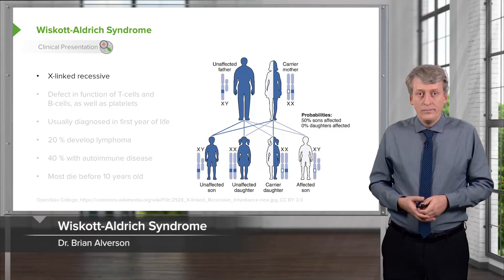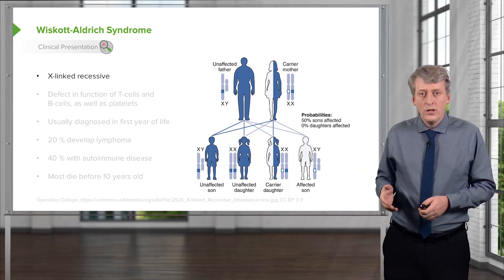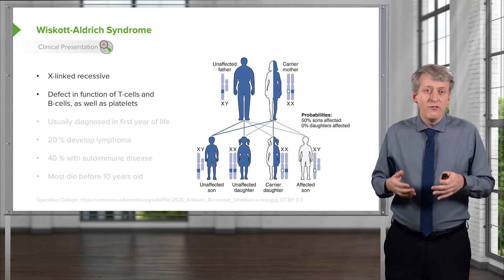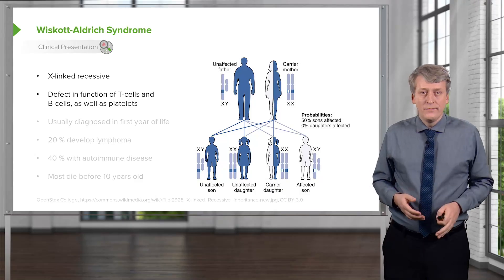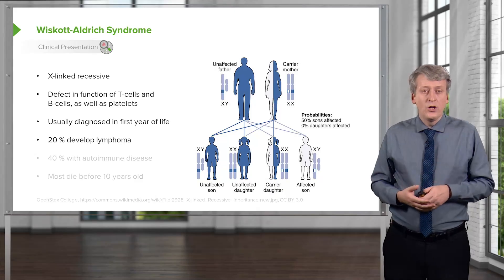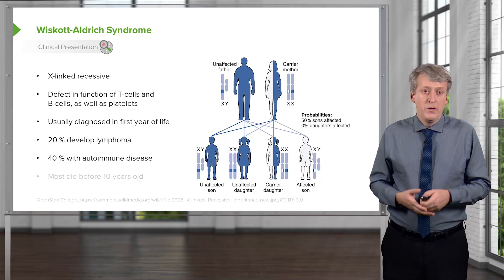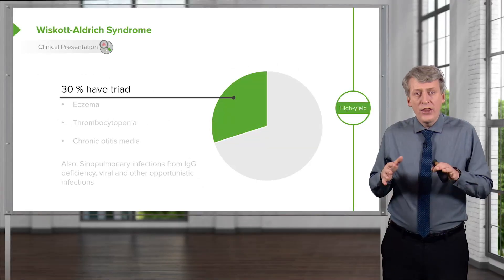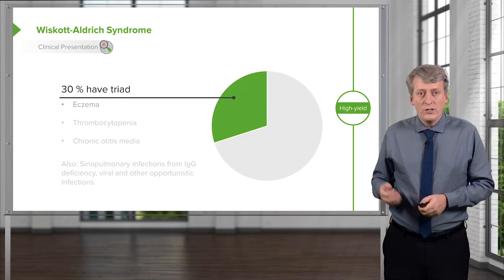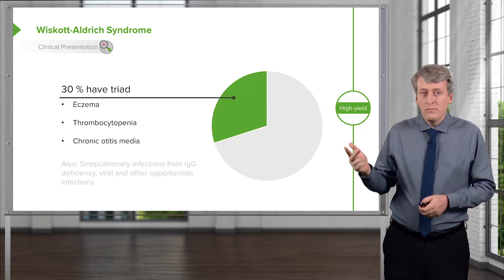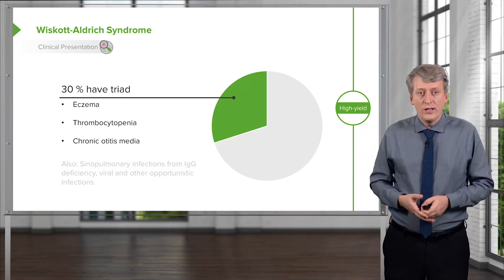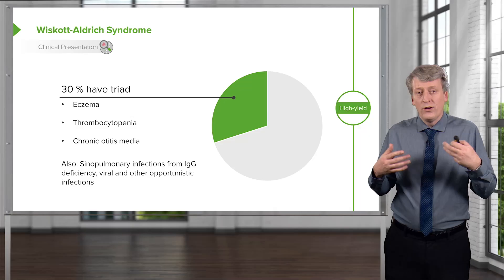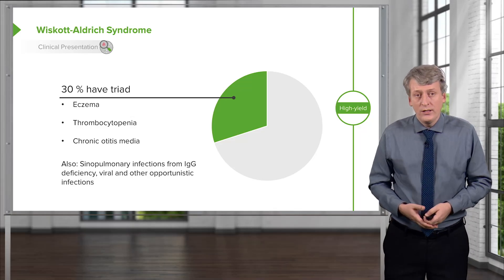Wiskott-Aldrich syndrome is an X-linked recessive trait, so boys are much more likely to be affected, and an affected girl is usually just a carrier. This is a defect in the function of T-cells, B-cells, and also platelets. It's usually diagnosed in the first year of life; 20% can go on to develop lymphoma and 40% have autoimmune disease. Most of these patients, sadly, die before age 10. About a third have the classic triad: eczema, thrombocytopenia, and chronic otitis media. They also get sinopulmonary infections such as pneumonia or sinusitis, and are at risk for viral and other opportunistic infections.